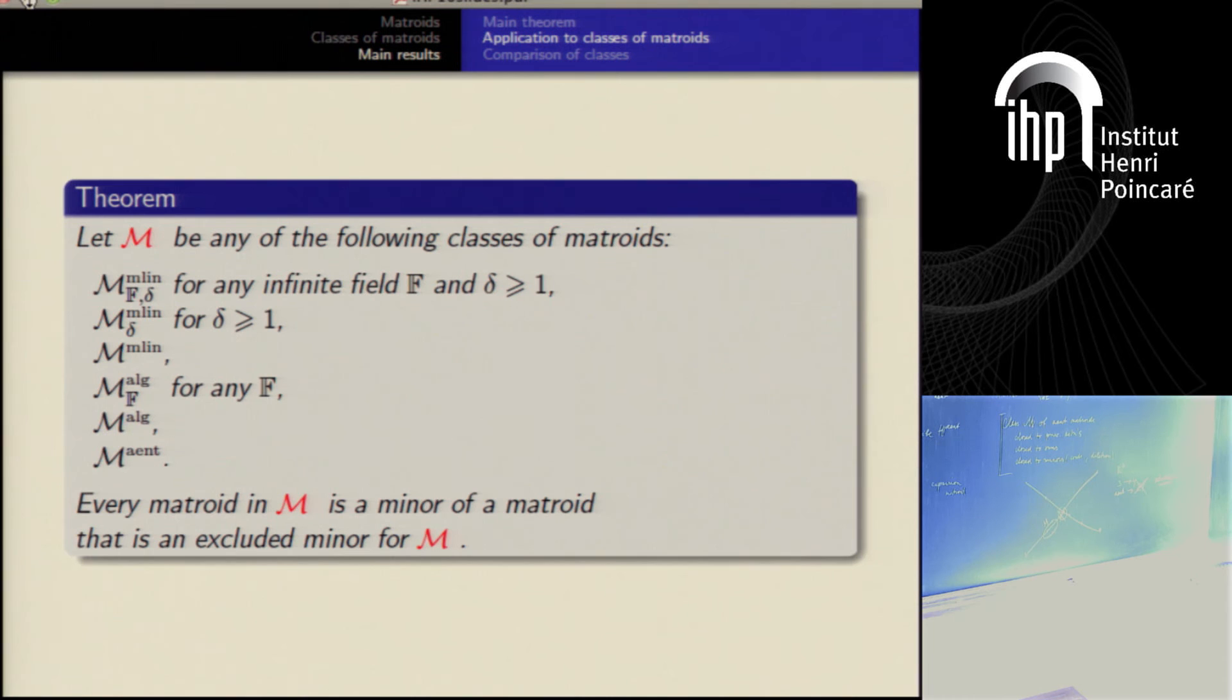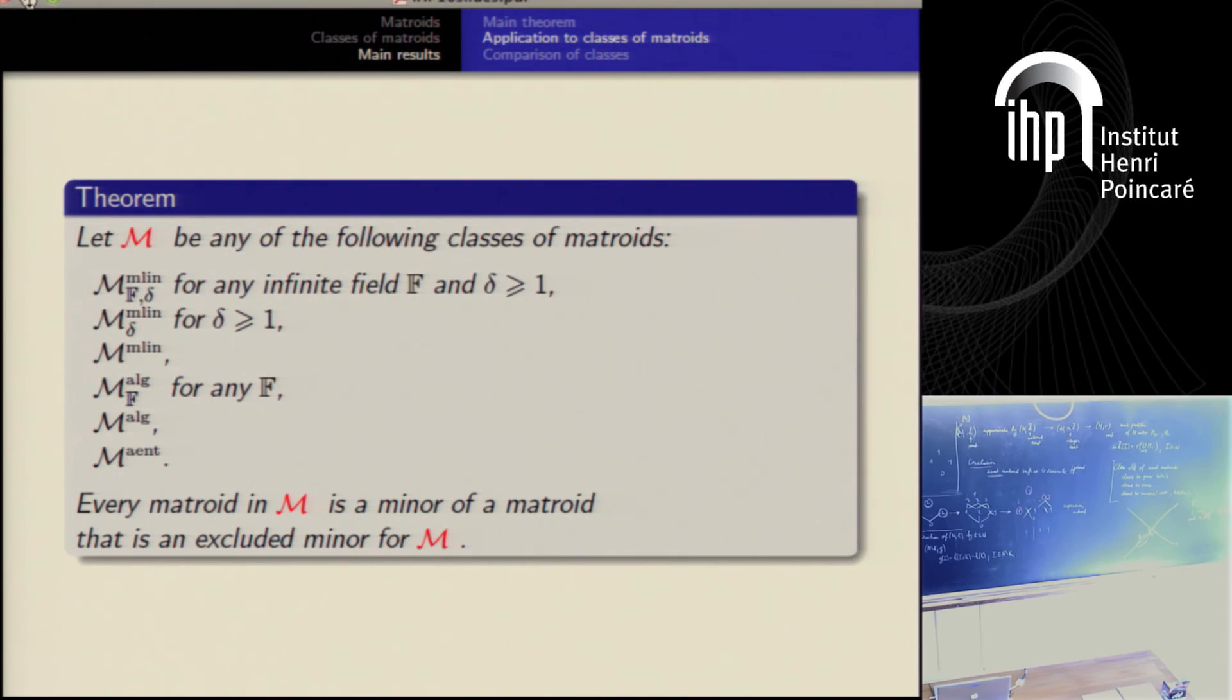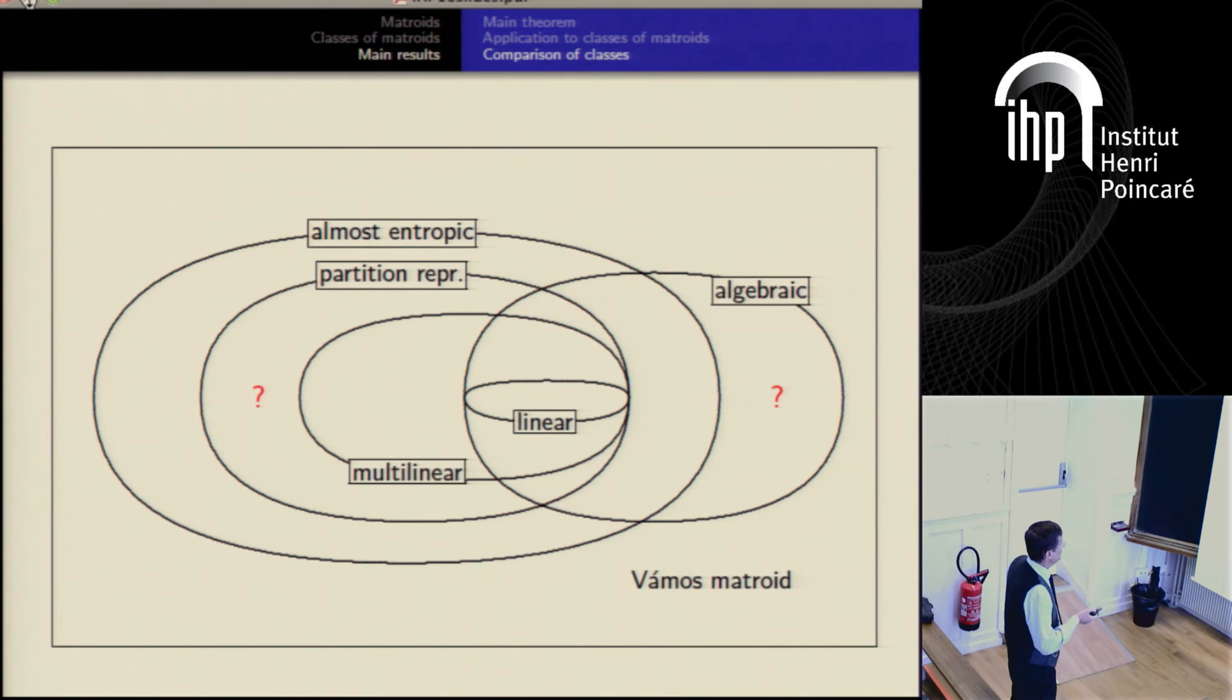And we don't understand this relaxation in the probabilistic language, I think. And this is one of obstacles in studying entropic region. So such thing is worth of attention. So this is hidden in proof. And what do I have? And this is applied to several classes of matroid. Yes, the most interesting is it is almost entropic, but also algebraic. Algebraic with fixed field, multilinear, etc.